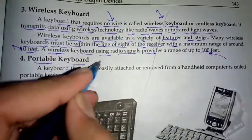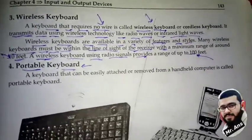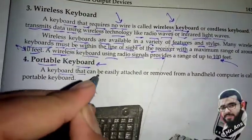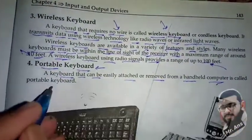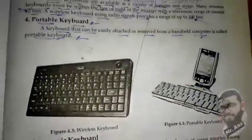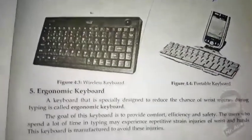Fourth type: portable keyboard. A portable keyboard can be easily moved from one place to another. A keyboard that can be easily attached or removed from a handheld computer is called a portable keyboard. Here you can see this portable keyboard.